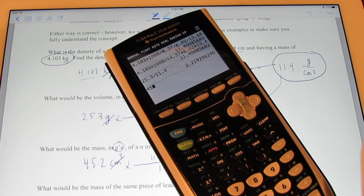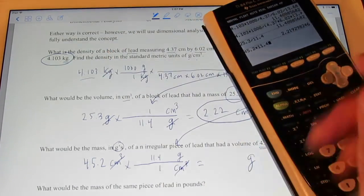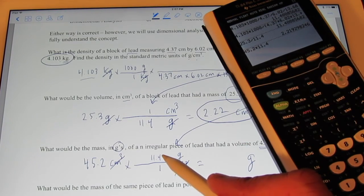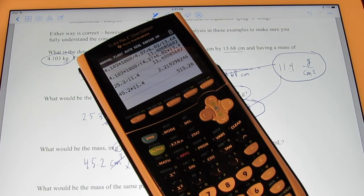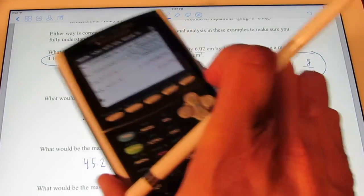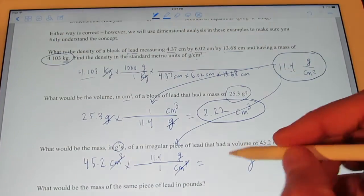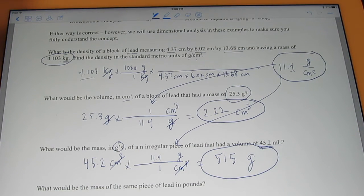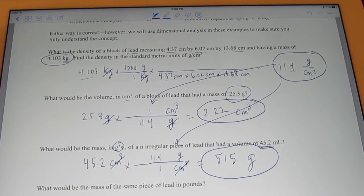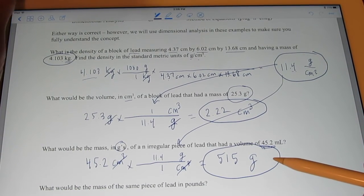So, let's see what we get here. 45.2 times 11.4. See, I'm multiplying by 11.4 because it's on the top this time. So, let's see what we get. 515.28 rounded off to three significant figures. Did you get 515 grams? Yeah, 515 grams is what I got.